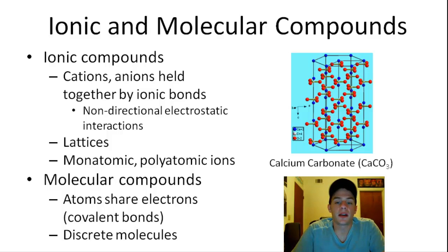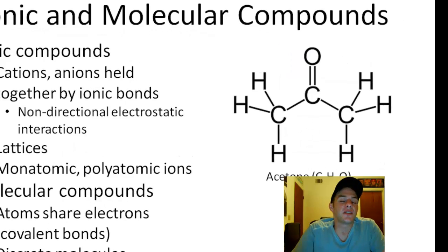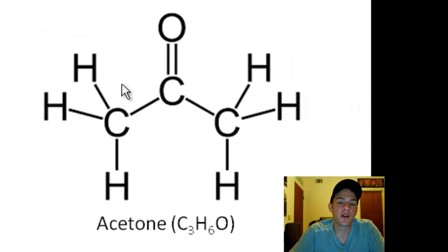So one example of a molecular compound would be acetone. Notice that each atom has a specific number of atoms that it bonds to. This is very different from ionic compounds. Instead of having a repeating lattice, in the case of molecular compounds such as acetone, we just have a bunch of entities that look just like this. We have a bunch of individual molecules.